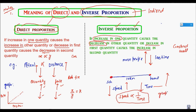What about the graph of inverse proportion? If I draw the graph of inverse proportion, that will never be a straight line. It will appear like a curve — on increasing the first, the second will decrease. More detail about graphs we will study in the chapter Introduction to Graph.